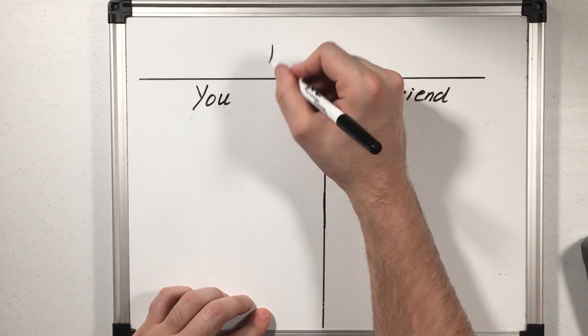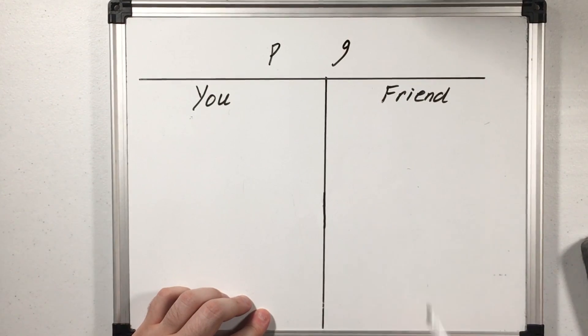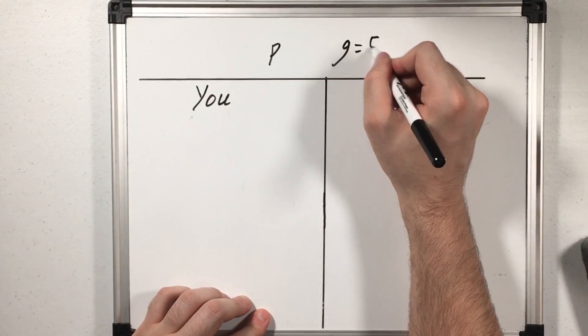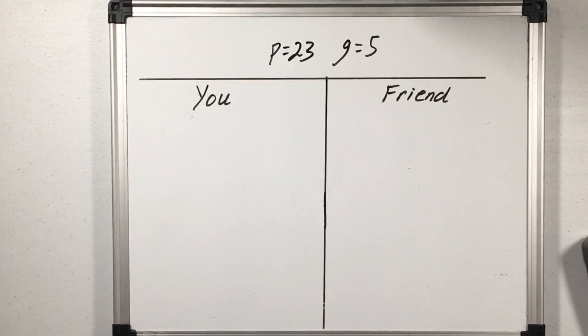First we're going to agree on a prime number P and an integer G. For this example let's just say G is 5 and P will be 23. Now we agreed on these beforehand which means that you, your friend, and the eavesdropper all know what these are.